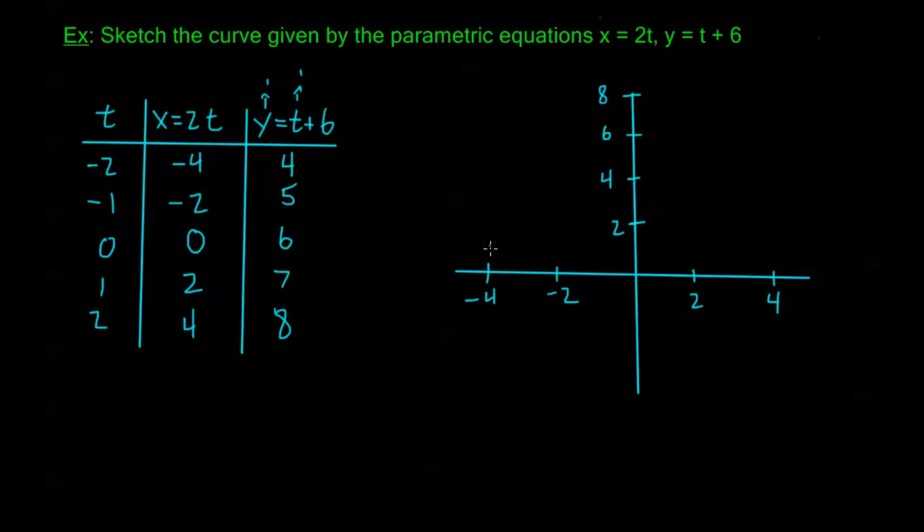So plotting these points, I have negative 4, 4, that's about right here. Negative 2, 5, that's going to be about right here. 0, 6... 2, 7, that's about right here. And 4, 8, about right here.